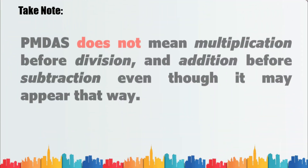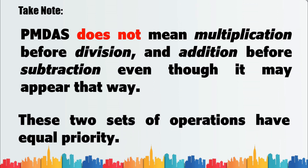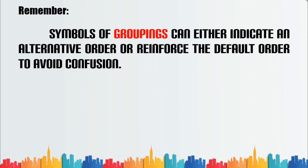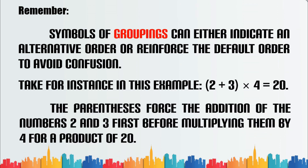Take note: PEMDAS does not mean multiplication before division and addition before subtraction, even though it may appear that way. These two sets of operations have equal priority. Remember, symbols of grouping can either indicate an alternative order or reinforce the default order to avoid confusion. For instance, (2 plus 3) times 4 equals 20 — the parentheses force the addition of 2 and 3 first before multiplying by 4 for a product of 20.